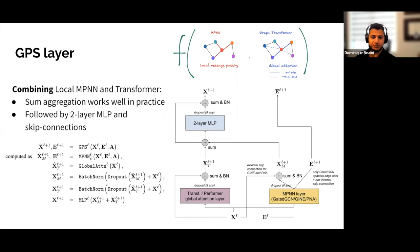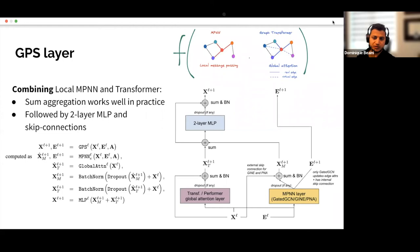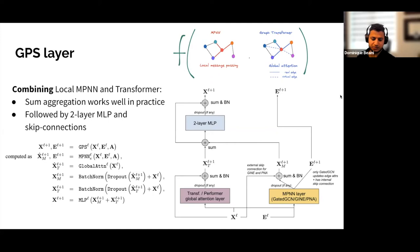Vijay adds: especially when the positional and structural encodings provided are not good enough, the transformer cannot discern which node to connect to based on position. This makes the over-smoothing problem much larger — if the model doesn't use the right features to weight its attention, it can just smooth everything out.